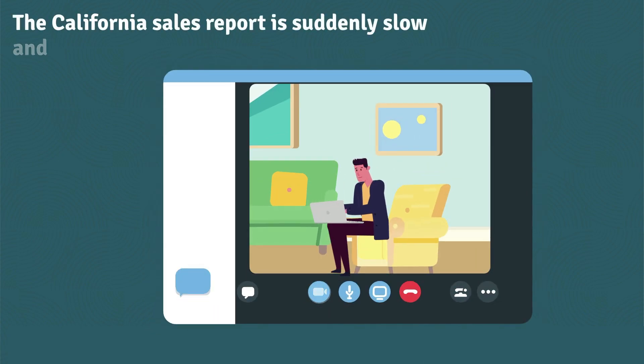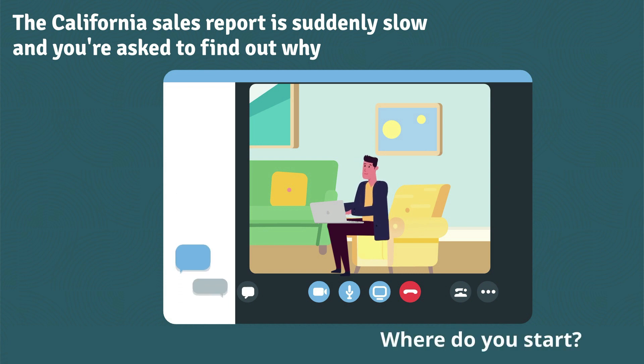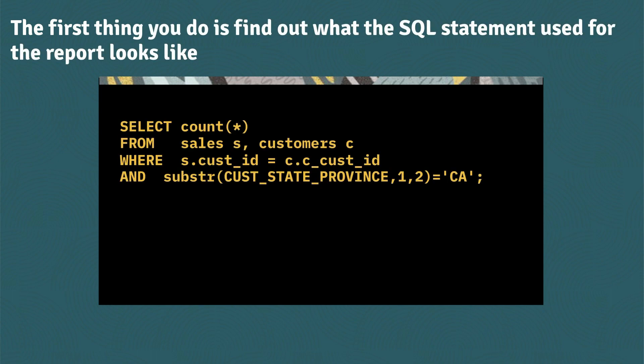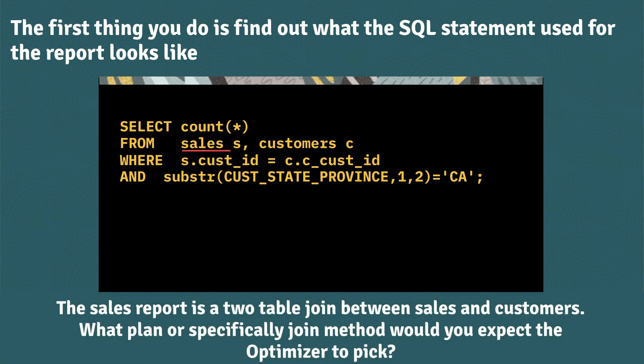Imagine the California sales report is suddenly running slow and you've been asked to find out why. Where do you start when you've been given a task like this? Well, the first thing you want to do is find out what the SQL statement that they're using behind that report looks like. And it looks like it's a two table join between sales and customer.